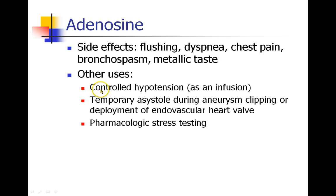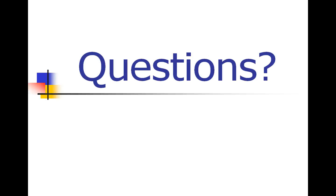Adenosine has some other interesting uses. It can be used as an infusion for controlled hypotension, which might be seen in a cardiac procedure room. Sometimes surgeons will request asystole for a few seconds if they're trying to clip an aneurysm — especially in the brain — or deploying an endovascular heart valve. They may ask for adenosine to temporarily stop the heart. And because it's a nice vasodilator, it's also good for pharmacologic stress testing, where it can cause that coronary steal syndrome discussed in the previous lecture.